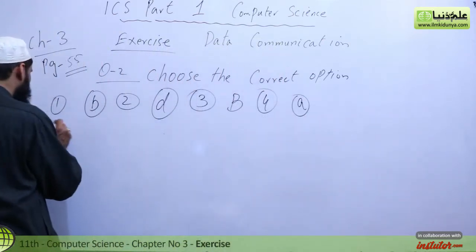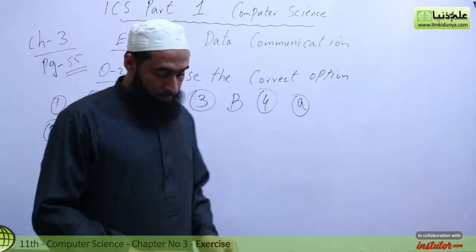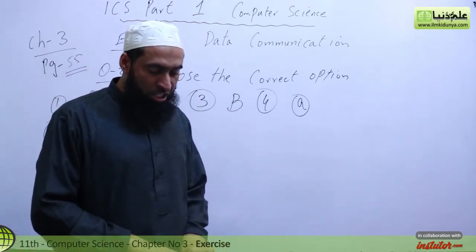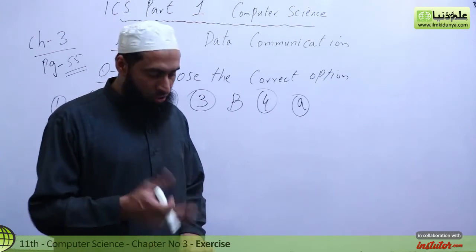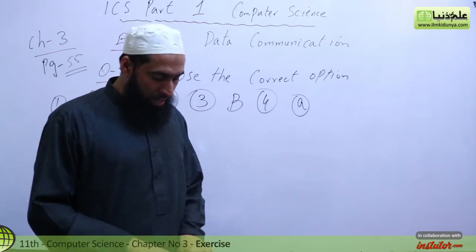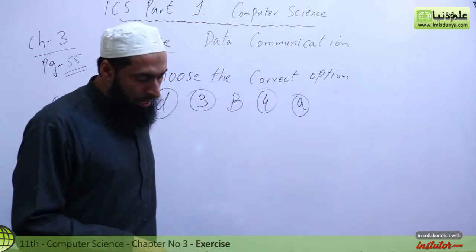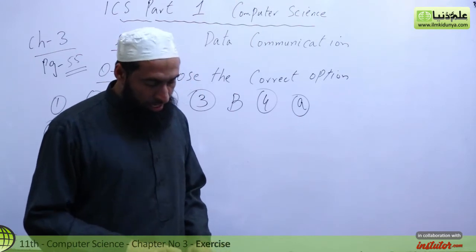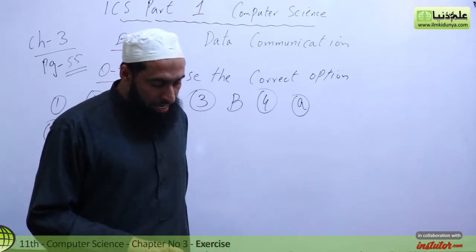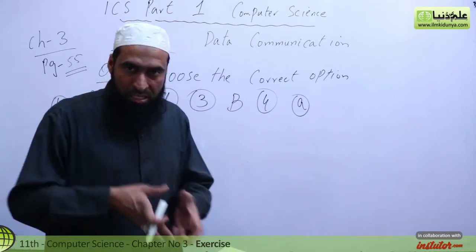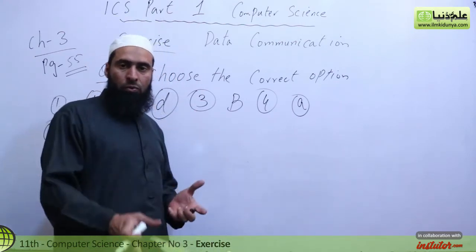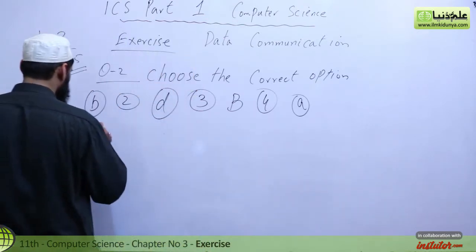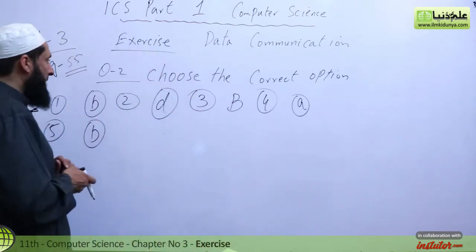Number 5: The blank is the physical path over which a message travels. Is it protocol, medium, signal, or all of the above? The answer is B — medium. The cable, microwave — these are our medium. The medium is the physical path over which data travels.